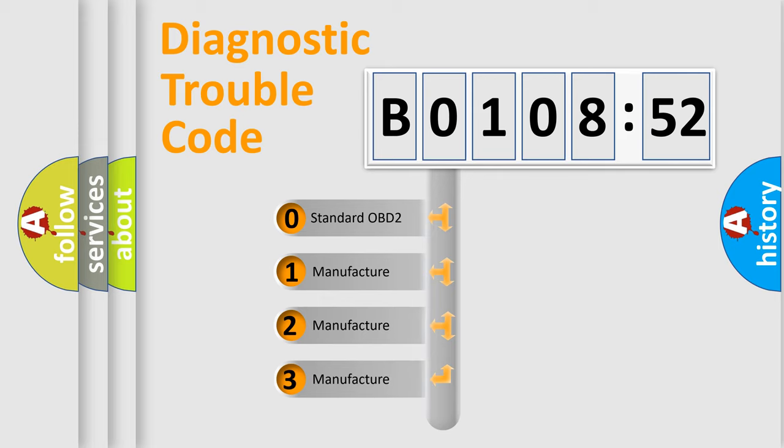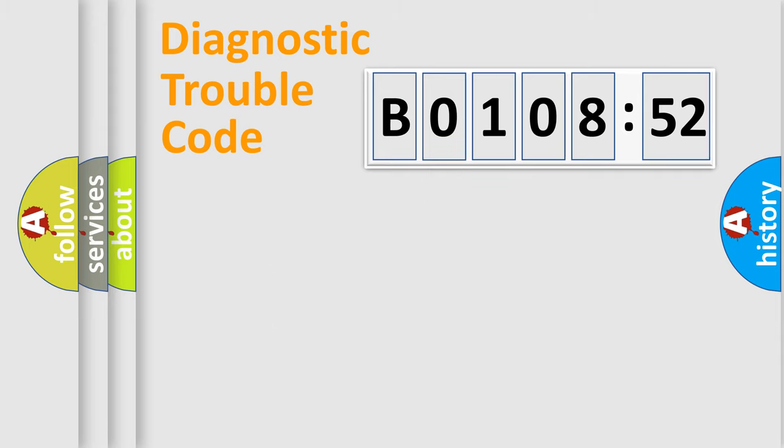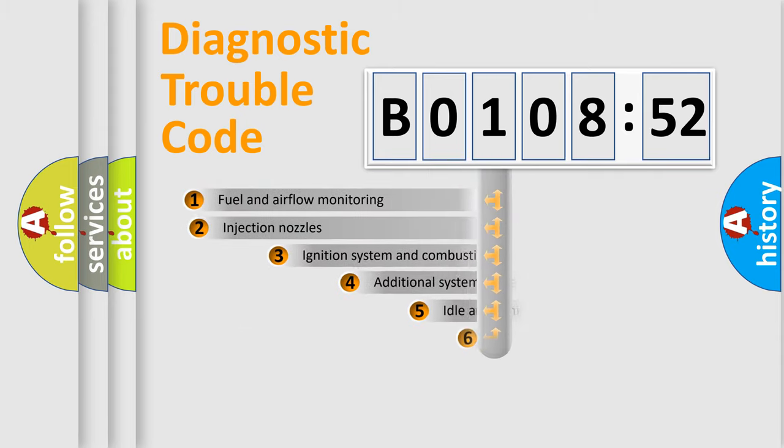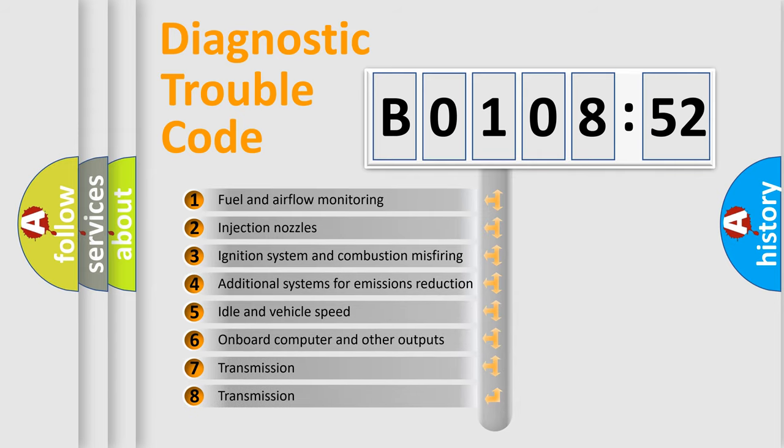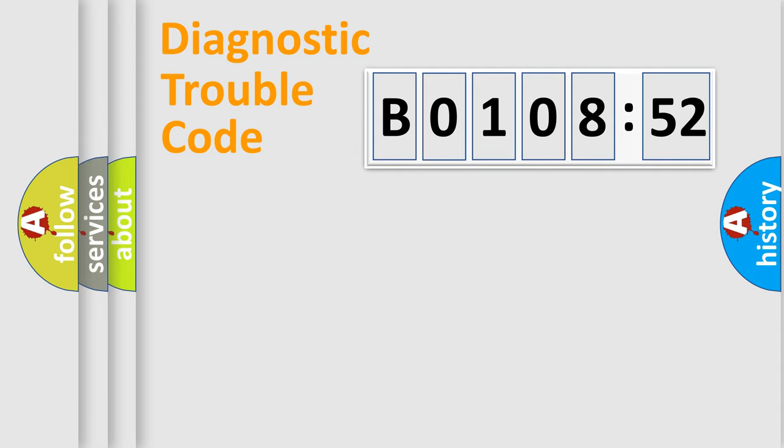If the second character is expressed as 0, it is a standardized error. In the case of numbers 1, 2, or 3, it is a manufacturer-specific expression of the car error. The third character specifies a subset of errors. The distribution shown is valid only for the standardized DTC code. Only the last two characters define the specific fault of the group.